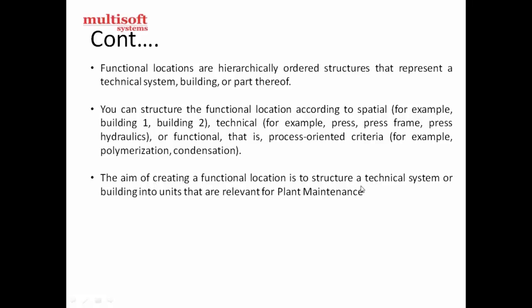The aim of creating a functional location is to structure a technical system or building into units. In the production area, there are functional locations where equipment is installed, and planned maintenance is required for that equipment. We identify particular objects or equipment from which functional location requires maintenance.